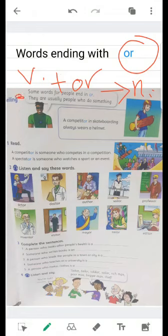Let's read together. Some words for people end in OR. They are usually people who do something. Some words that are verbs end with the letters OR, and they become nouns. These nouns indicate the person who does the action.